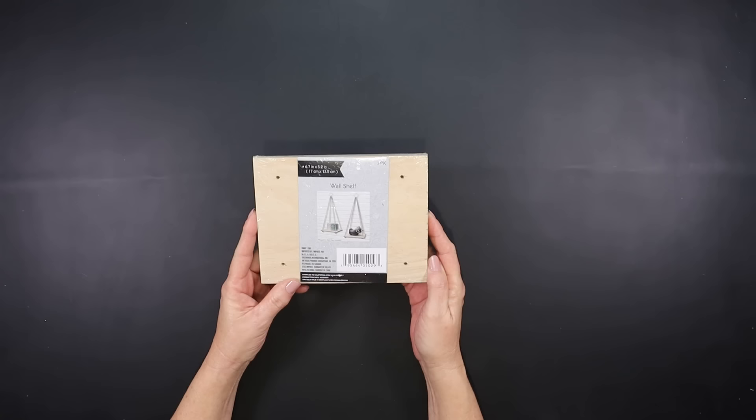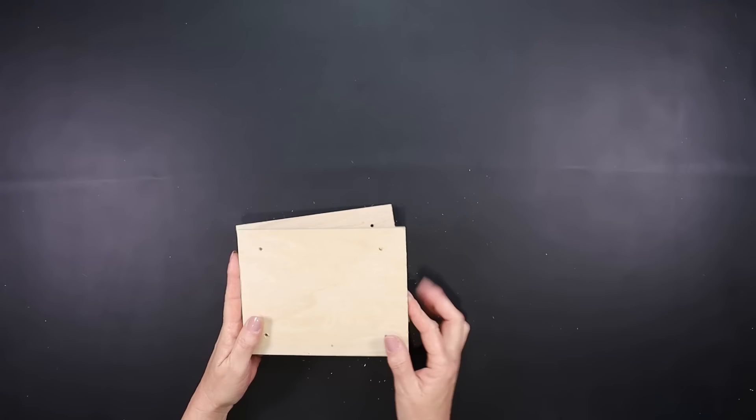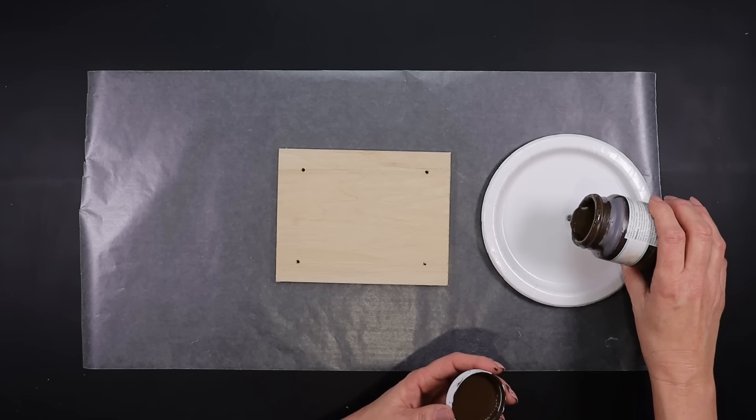For our first project, we'll be using one of Dollar Tree's small wall shelves. This comes with two pieces of wood, so this will be our first and second project in today's video. If you can't find these small shelves, you could always use a scrap piece of wood. The possibilities are endless.